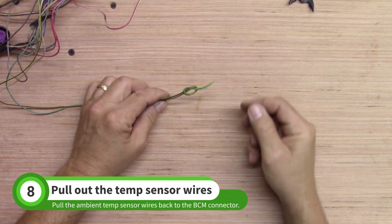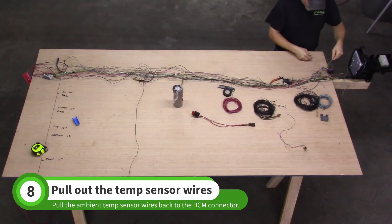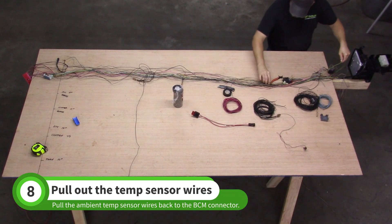Find the ambient temperature sensor wire you tied in a knot while thinning the harness. Pull the wires back to the BCM connector.